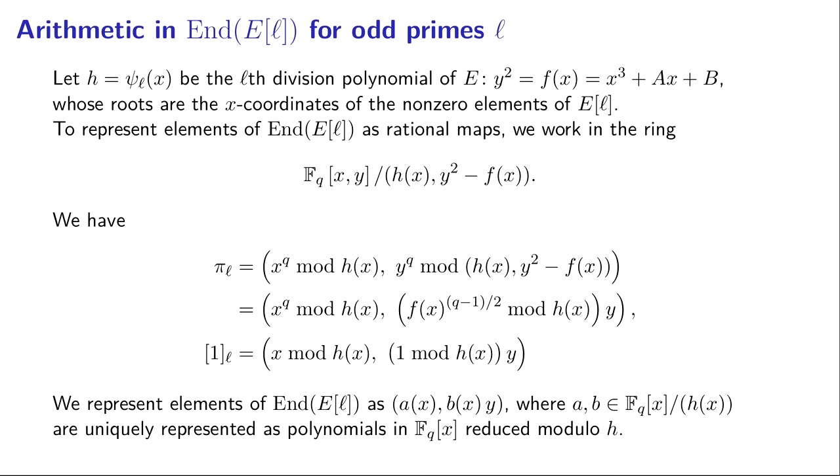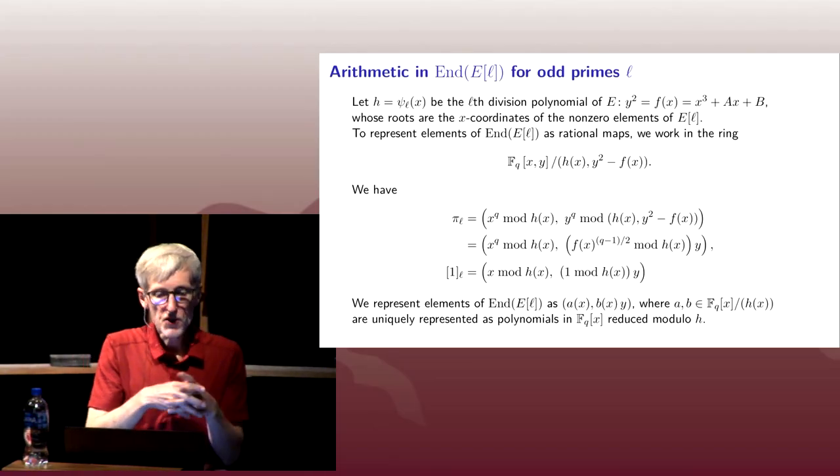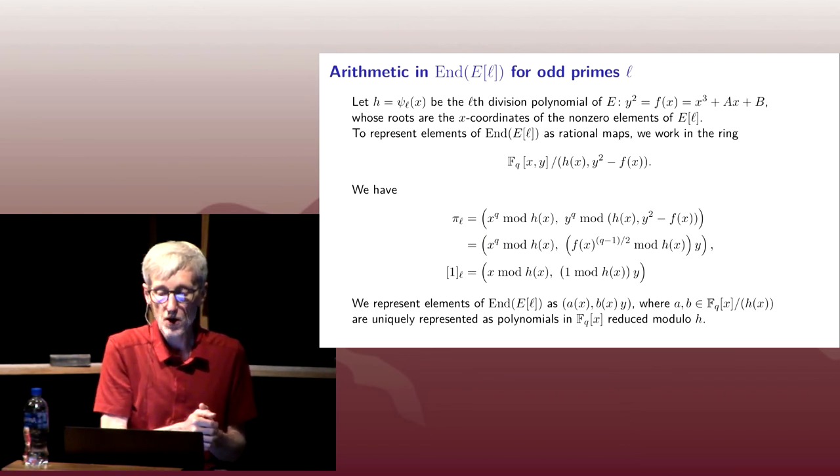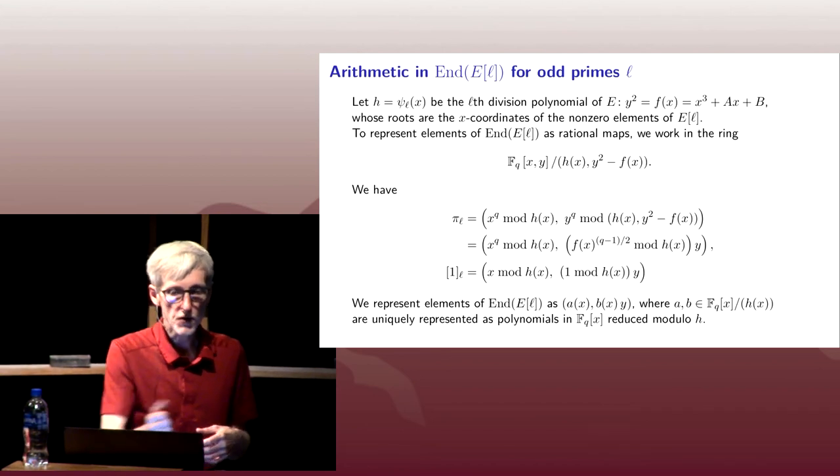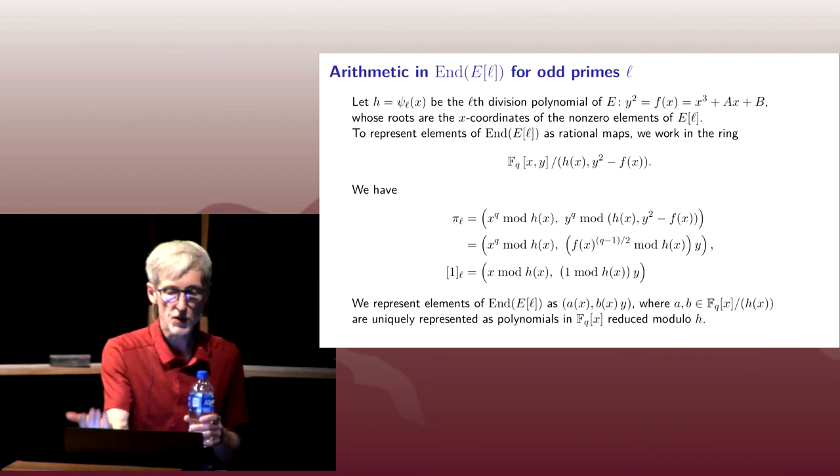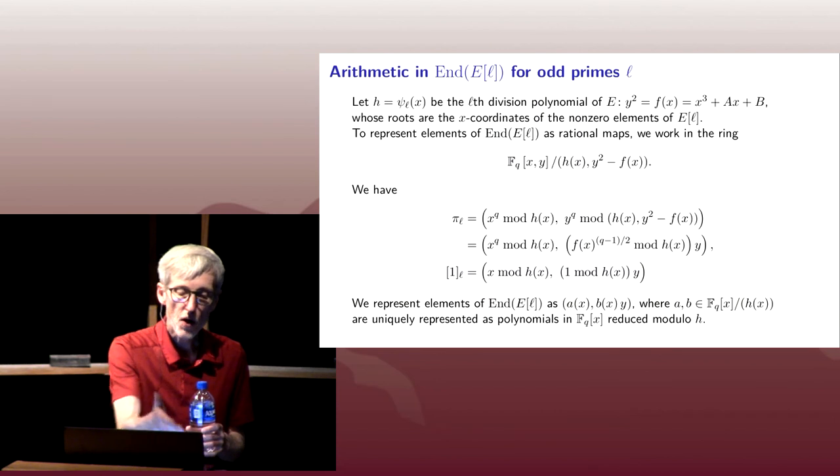Because we're working with a short Weierstrass model, there are l-squared minus one over two distinct x-coordinates. And that's exactly the degree of the lth division polynomial, l-squared minus one over two. And to represent elements of our endomorphisms acting on the l-torsion as rational maps, we're going to work in the following quotient ring. We're going to take the two variable ring over F_q, and we want to mod out by our curve equation, which is y-squared minus f(x), the ideal generated by that, and our division polynomial.